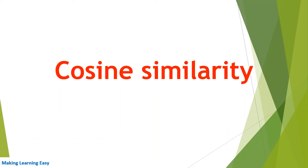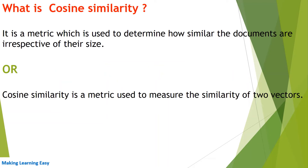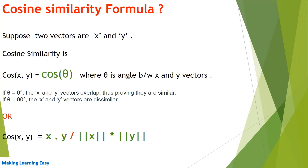Hello everyone, welcome to the session. In this session we are going to discuss cosine similarity. It is a metric which is used to determine how similar documents are irrespective of their size, or we can say the metric used to measure the similarity of two vectors. Let's see the cosine similarity formula.